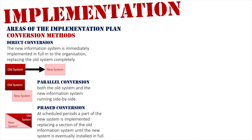Thirdly is a phase conversion, which means that at scheduled periods, part of the new system is implemented, replacing a section of the old information system. This is done gradually until eventually the new system is fully installed and the old system is completely gone. It gives the organization time to master the system part by part. It takes a lot longer to install, but you get to master one part before you start learning the next.